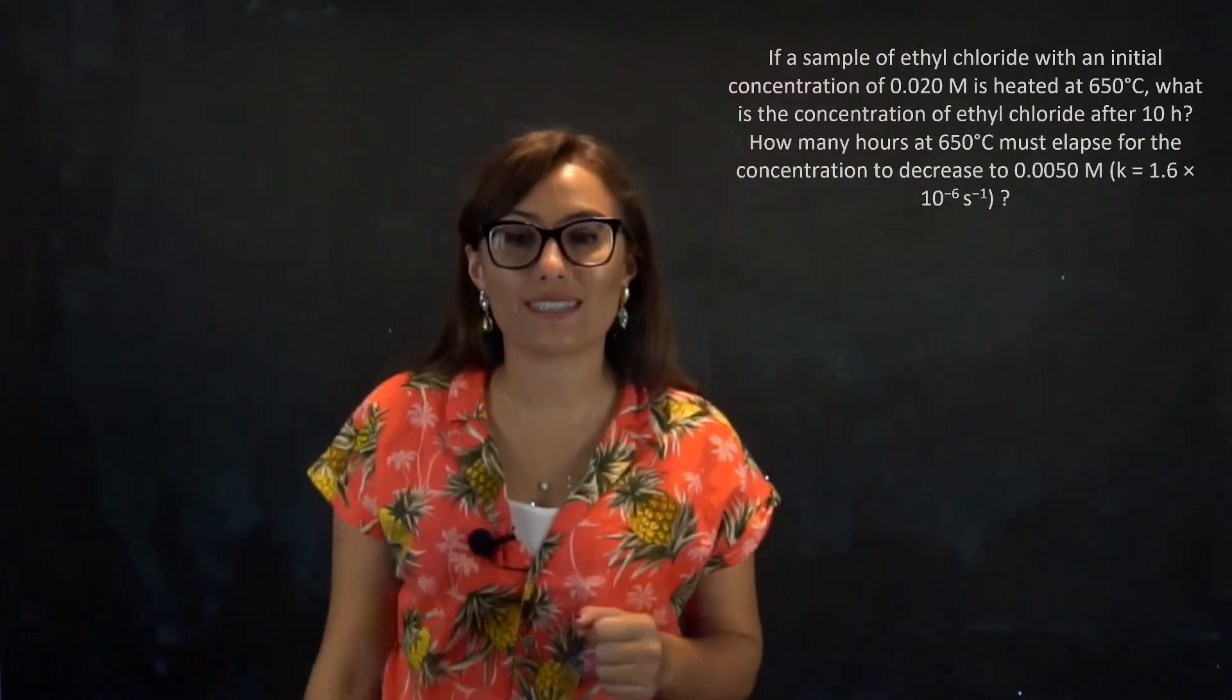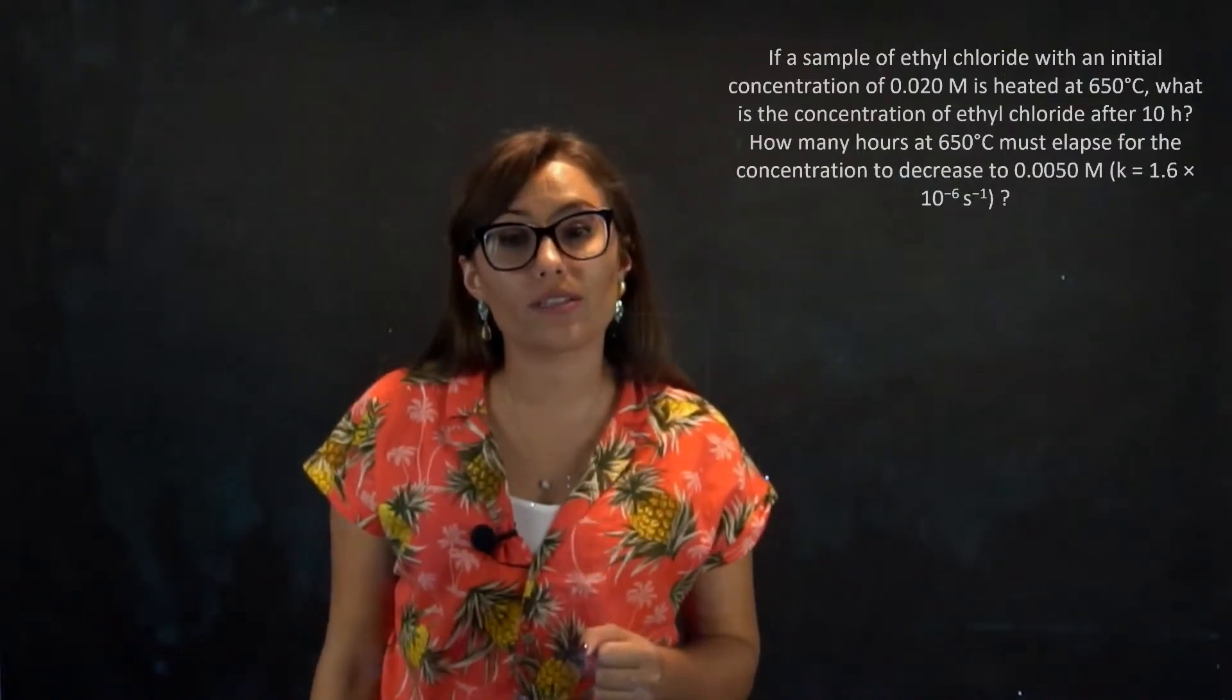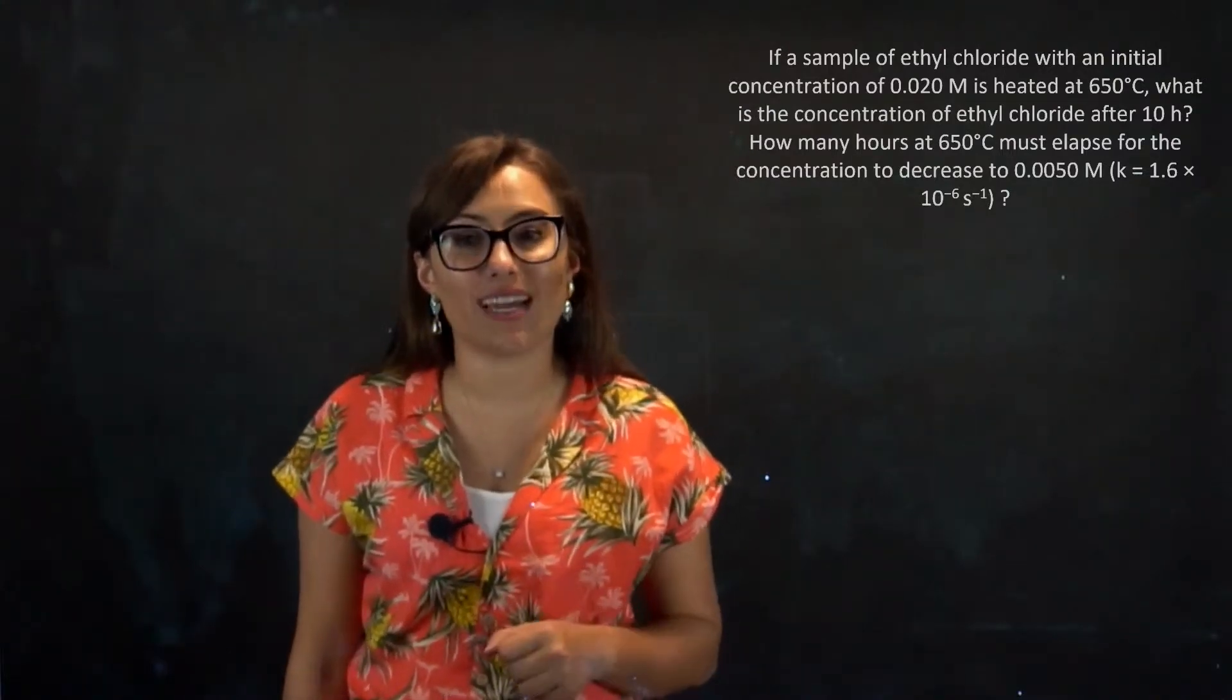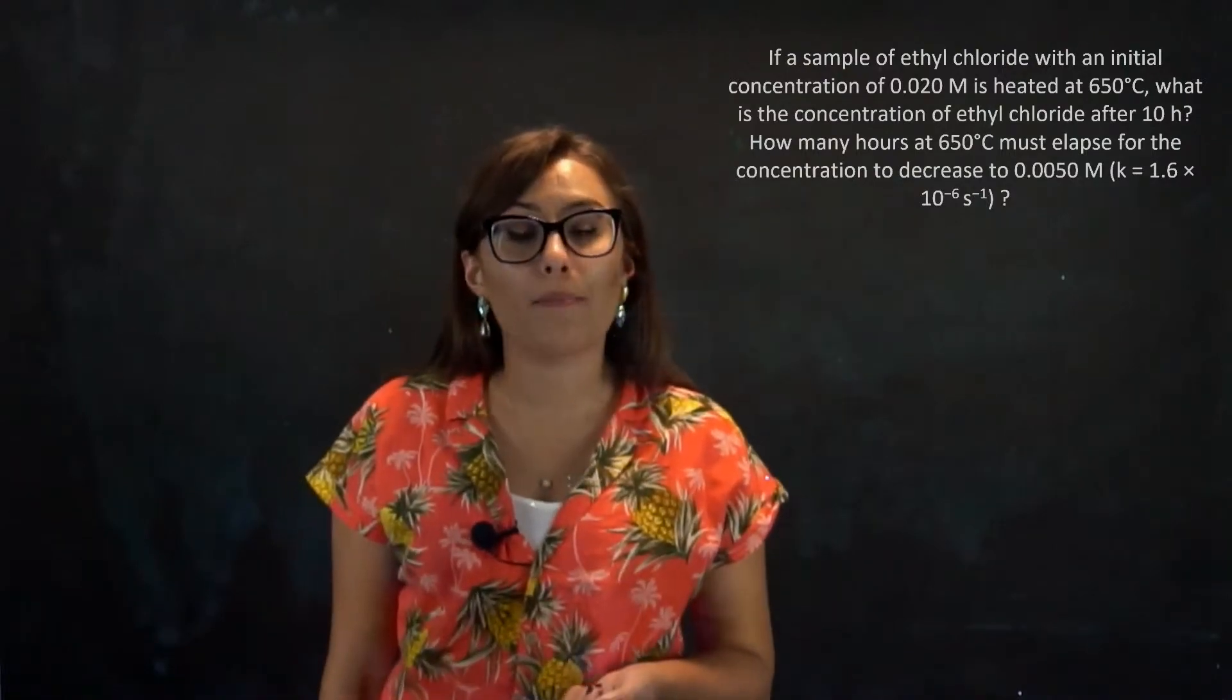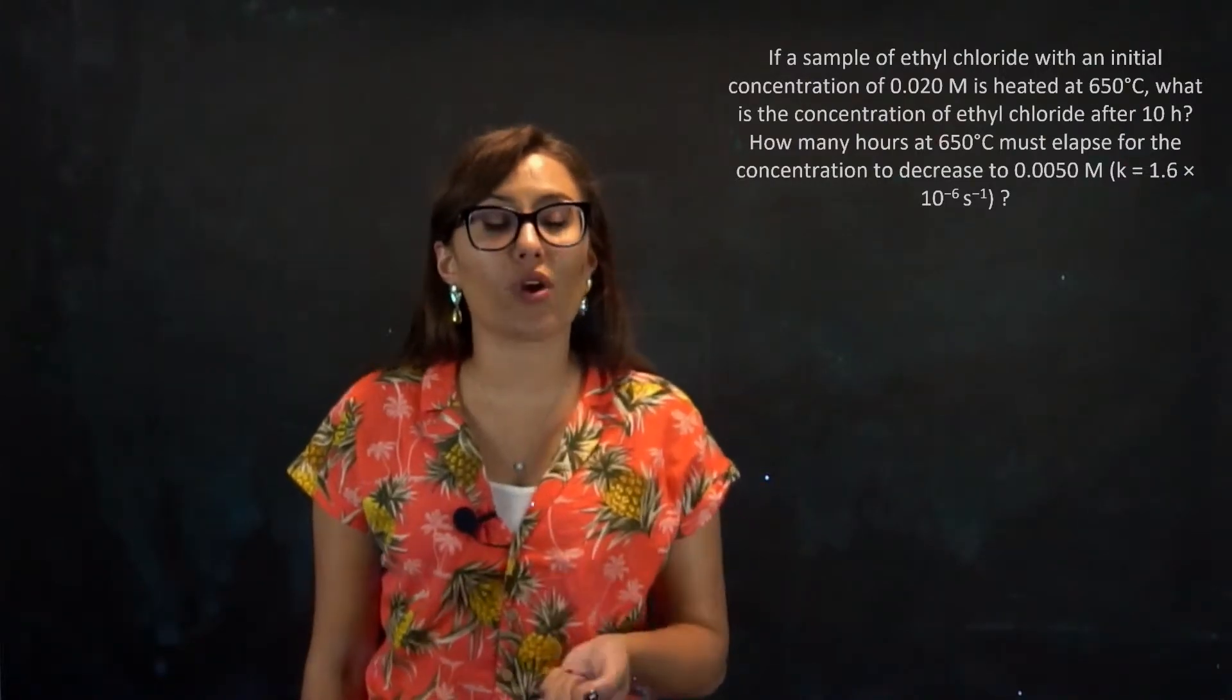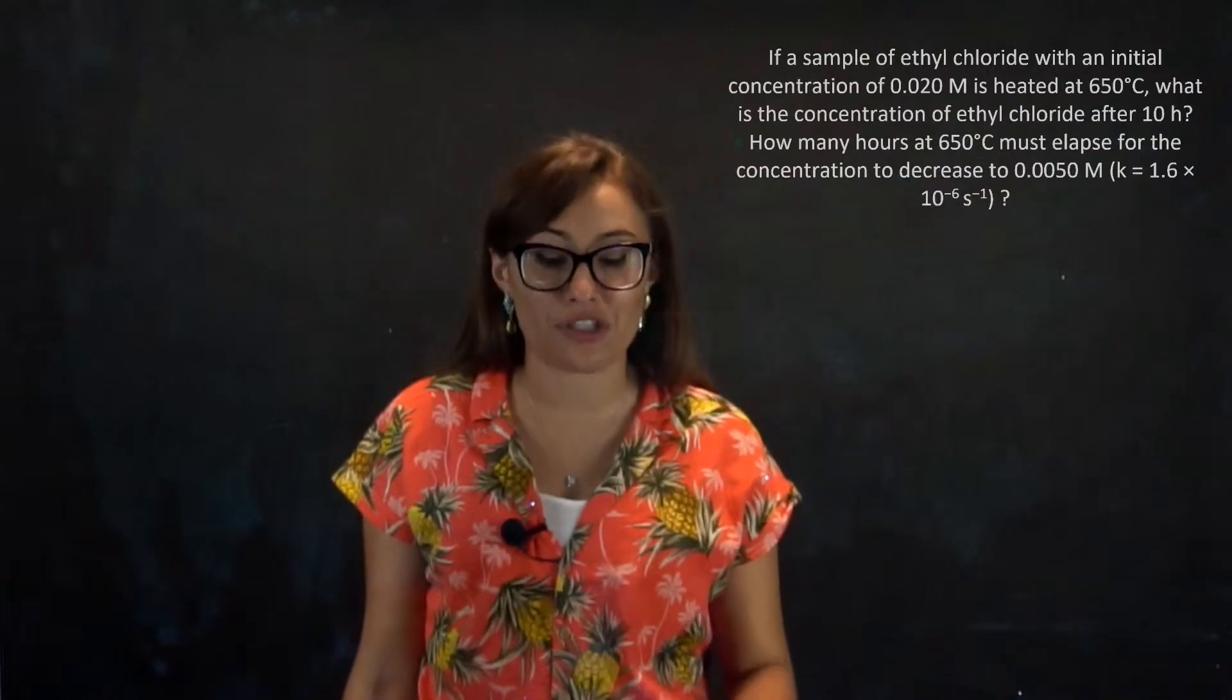Hello and welcome back. The following problem states: if a sample of ethyl chloride with an initial concentration of 0.02 molar is heated at 650 degrees Celsius, what is the concentration of ethyl chloride after 10 hours? And how many hours at 650 degrees Celsius must elapse for the concentration to decrease to 0.050 molar with a rate constant equal to 1.6 times 10 to the negative 6 per second?